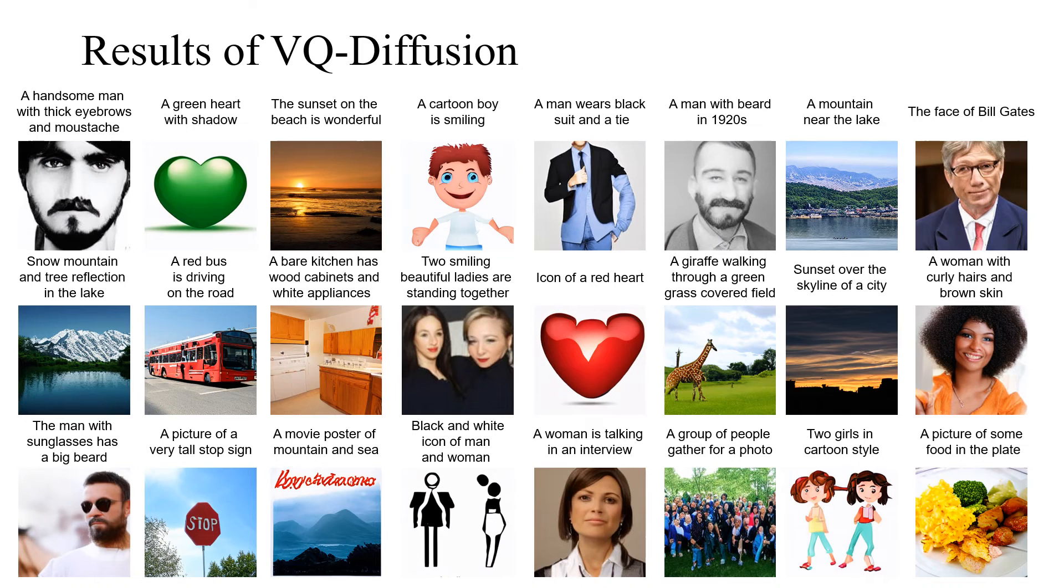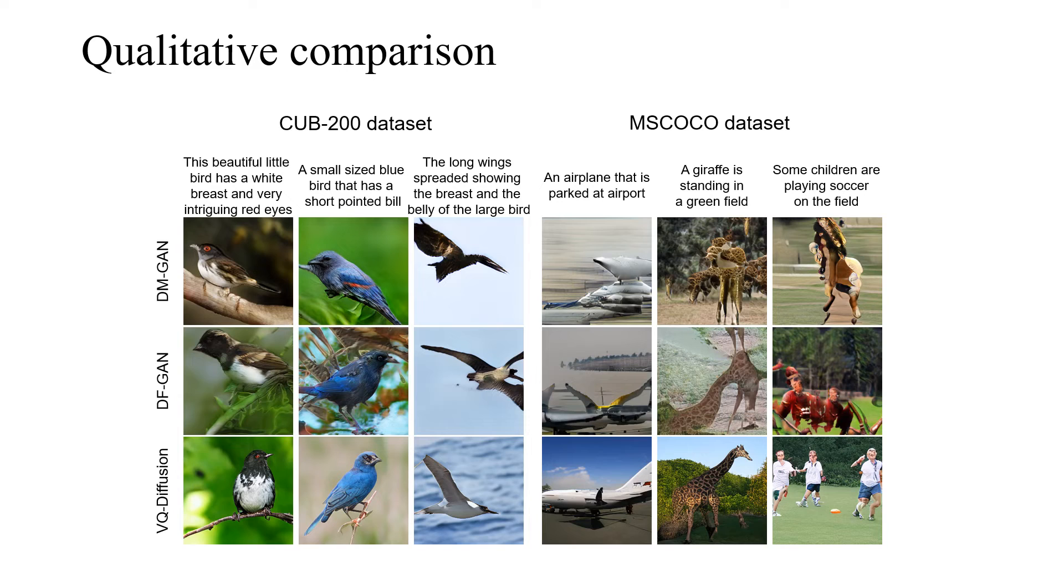We show some results on in-the-wild text-to-image synthesis here. Our VQ diffusion could generate high-quality images. Also, we provide both qualitative and quantitative results on CUB and Microsoft COCO datasets. Compared with GANs, our synthesized images have better realistic fine-grained details and are more consistent with the input text.